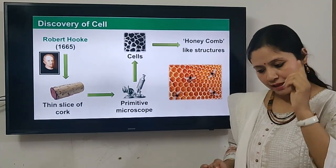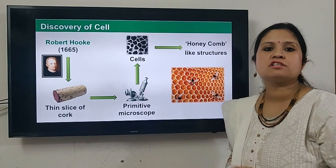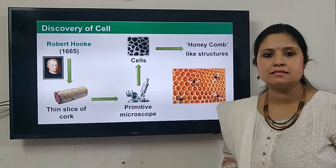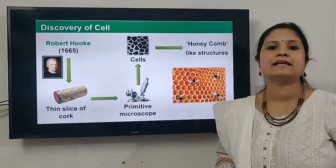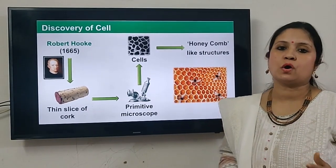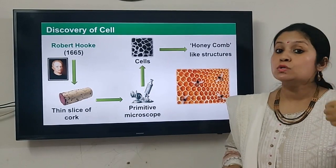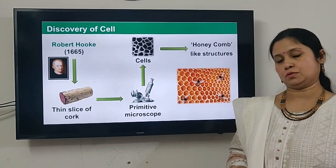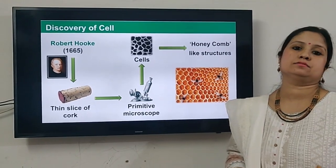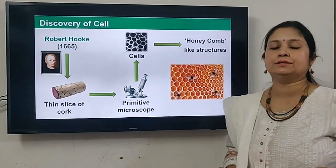He termed those tiny compartments 'cells' because in Latin language, tiny compartments are called cells. He concluded that if this particular plant is made up of these tiny compartments, all living organisms must be made up of such tiny compartments called cells. So Robert Hooke discovered cells in 1665.